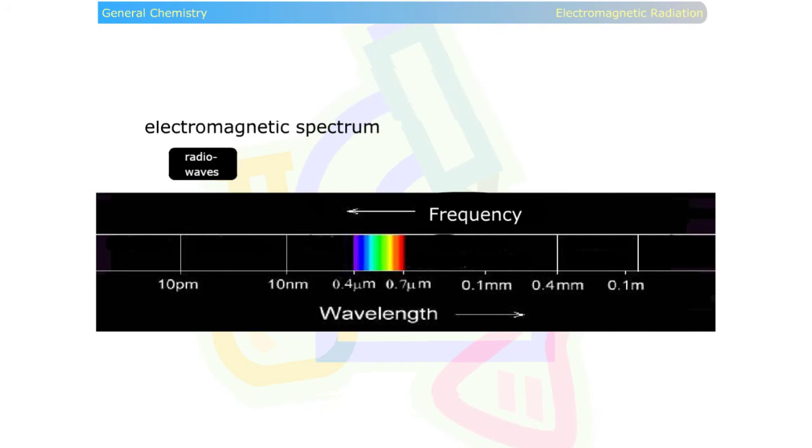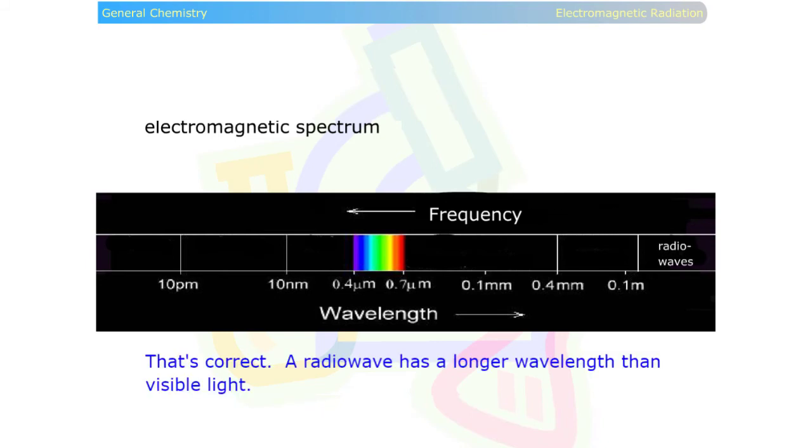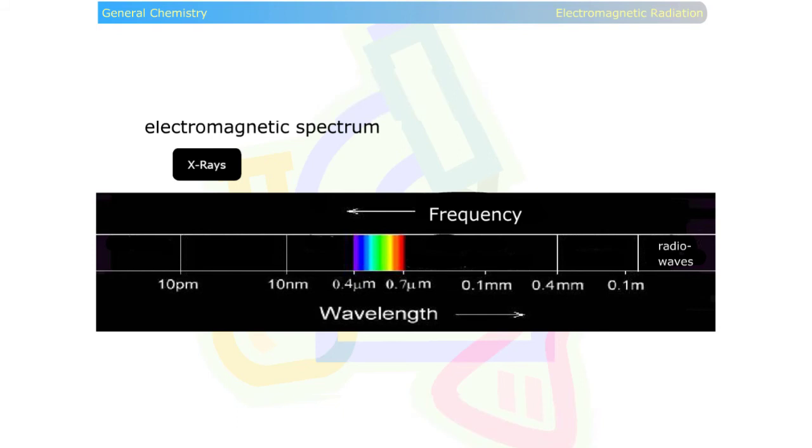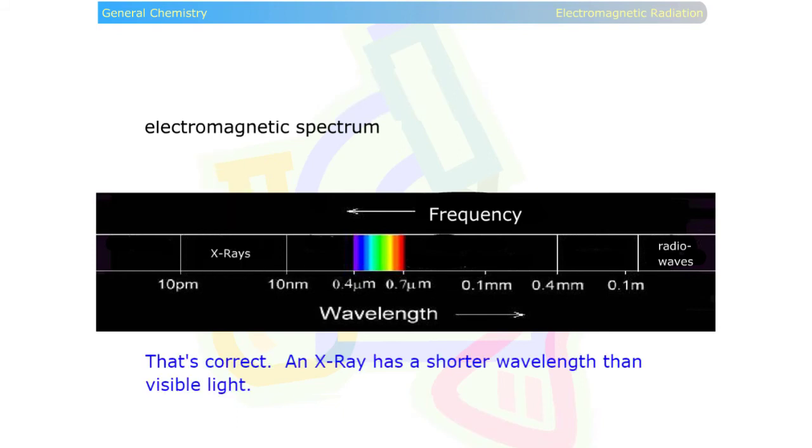Let's do a quick review. See if you know the correct location in the electromagnetic spectrum for each example. Radio wave. A radio wave has a longer wavelength than visible light. X-ray. An x-ray has a shorter wavelength than visible light.